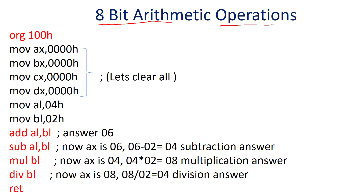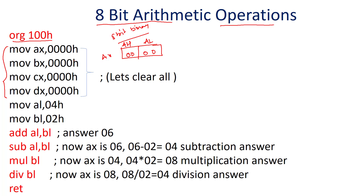Now let us start the 8-bit arithmetic operation using 8-bit binary input. The program starts with the origin syntax for the emulator. The next four instructions — MOV AX, 00H; MOV BX, 00H; MOV CX, 00H; MOV DX, 00H — clear all register contents to zero for accurate results. Then we move AL register with 04H, which is a hexadecimal number. If H is not mentioned, it will be treated as decimal.